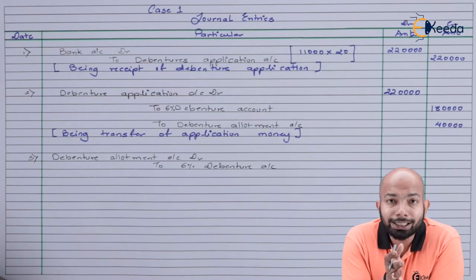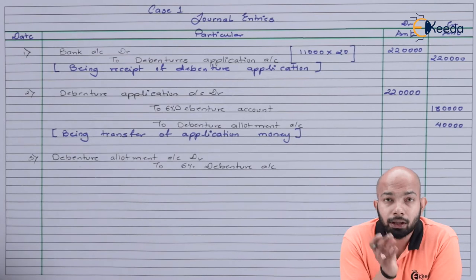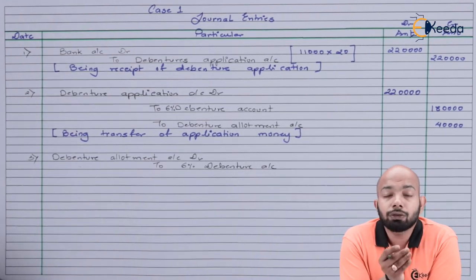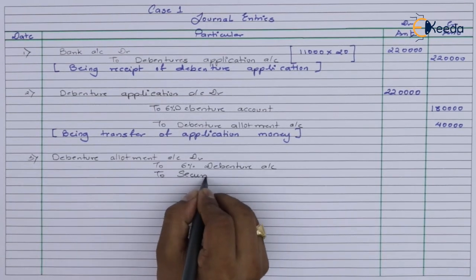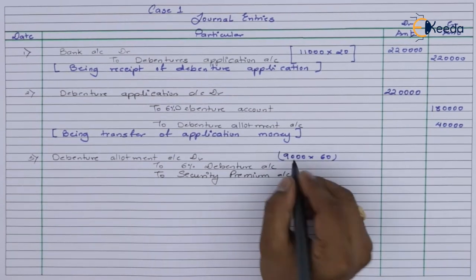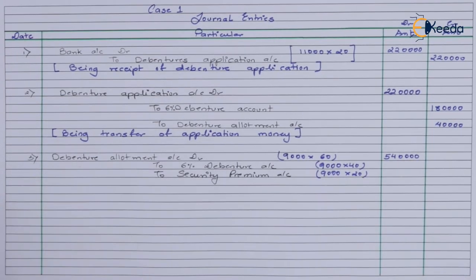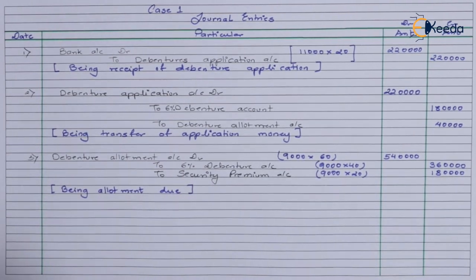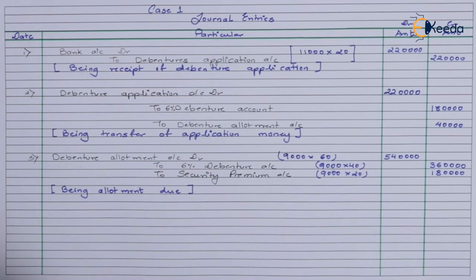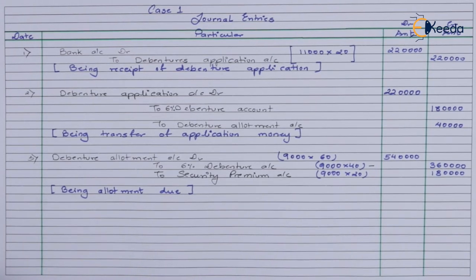When passing the debenture allotment entry, note that Rs.60 is taken on allotment, out of which Rs.20 is the premium — so capital is only Rs.40. Security premium will also be part of this entry. Total allotment expected: Rs.5,40,000, of which Rs.3,60,000 is capital and Rs.1,80,000 is security premium, as the debentures are issued at premium.